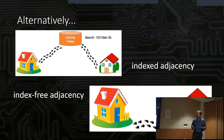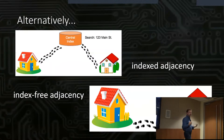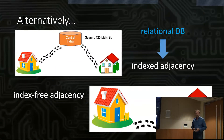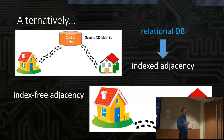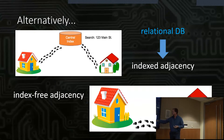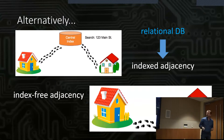Just to reinforce the concept: with indexed adjacency, imagine you want to visit a friend but don't know where they live — it's like walking downtown to a central index, looking up their address, then going to their house. With index-free adjacency, you know exactly where they live; you have a direct pointer and just walk straight to their house. Visually, you can see the greater time efficiency — two hops is easy, versus going back to the index again to find your next destination.